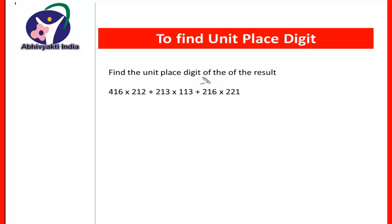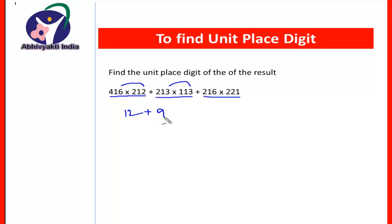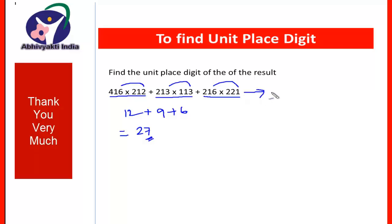Now here is another question: find the unit place digit of the result of 416 × 212 + 213 × 113 + 216 × 121. First take the product 6 × 2 = 12. Plus 3 × 3 = 9. Then 6 × 1 = 6. Adding together: 12 + 9 + 6 = 27. Since the unit place digit is 7, the unit place digit of the result will also be 7. So in this case your answer will be 7.